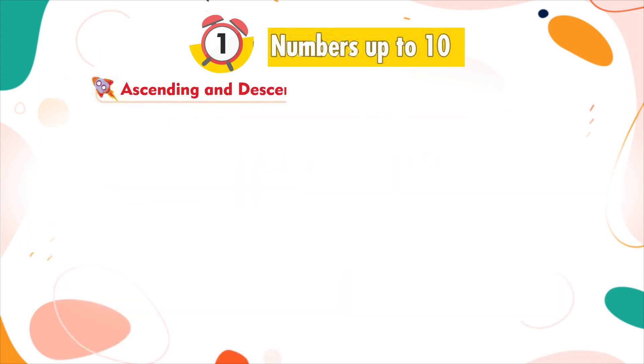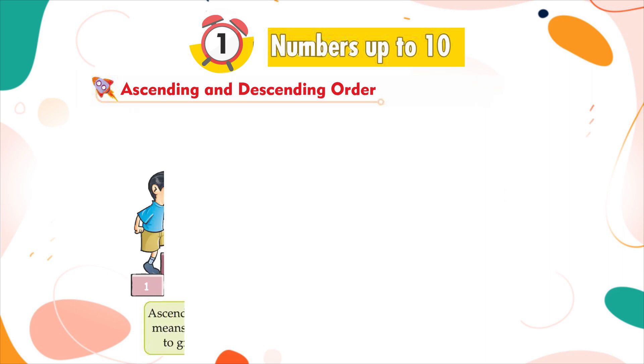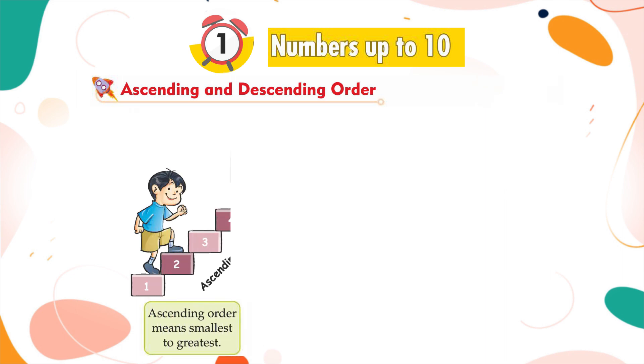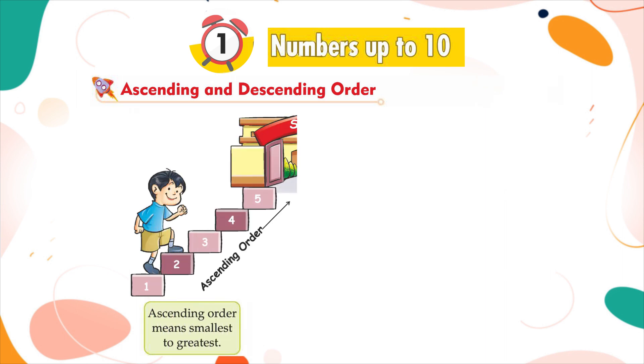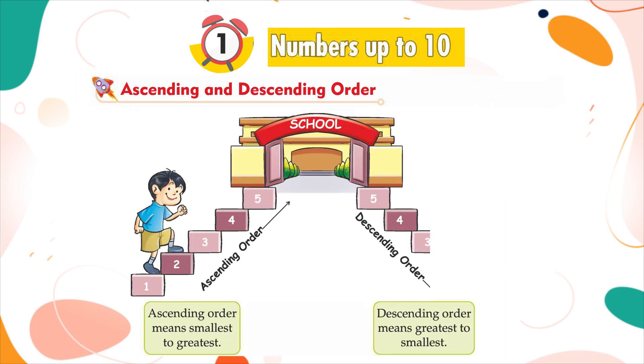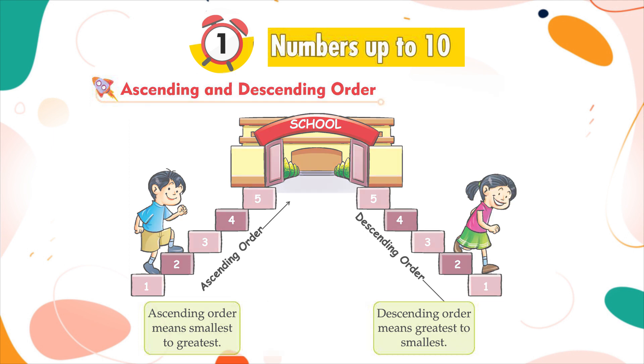Ascending and descending order. Ascending order means smallest to greatest. Descending order means greatest to smallest.